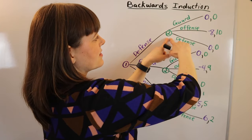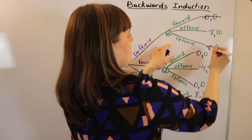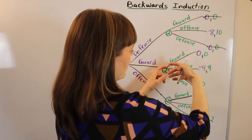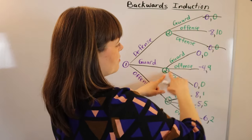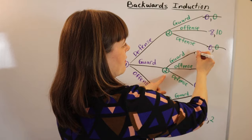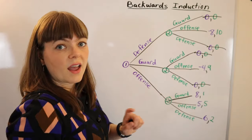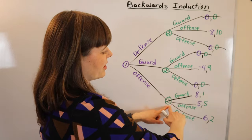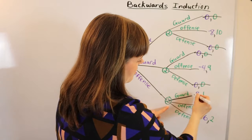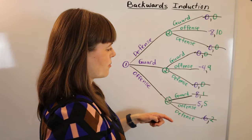If you choose defense, player two looks at the options and will definitely choose offense — payoffs zero, ten, zero — so those other paths are never reached. If you guard your flag, player two looks at zero, nine, and zero and again chooses offense. If you choose offense, player two chooses between one, five, and two and picks five — offense again. We notice that offense is a dominant strategy for the other player.